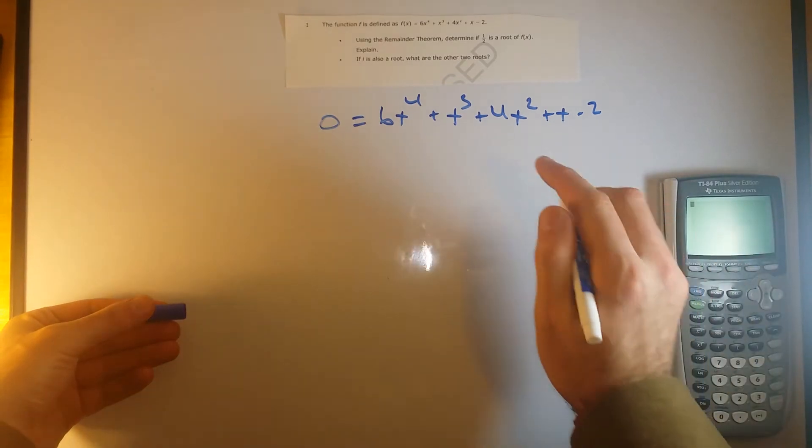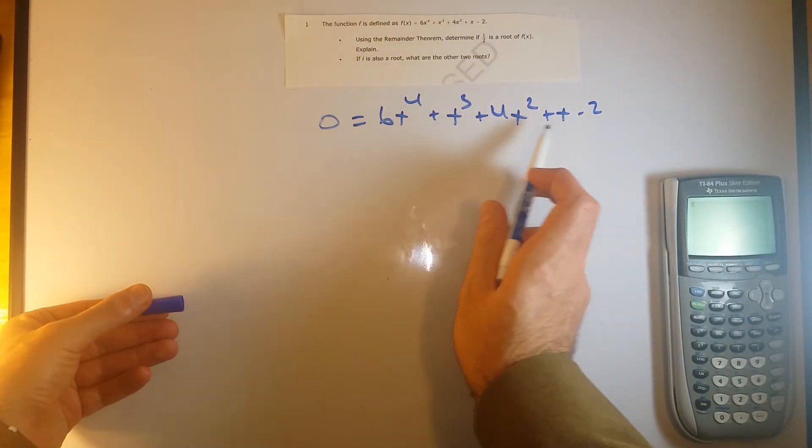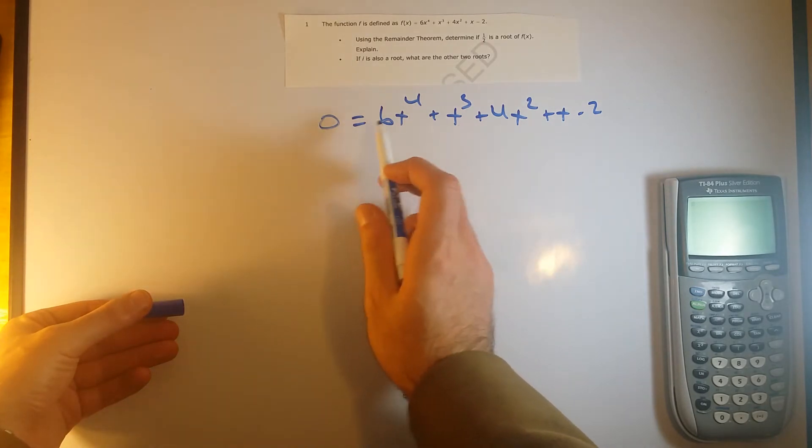So what our remainder theorem says basically is, if we plug in this value, we won't get any remainder out, the output will just be 0. So let's just test that out.